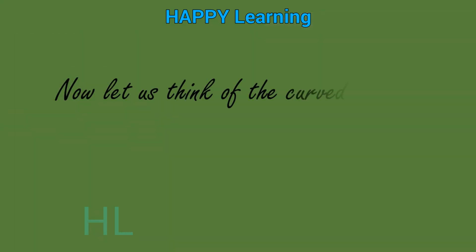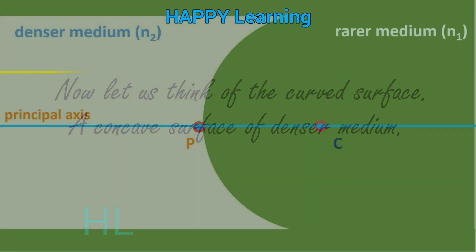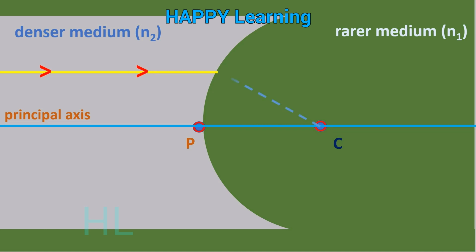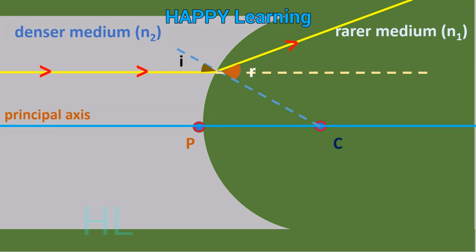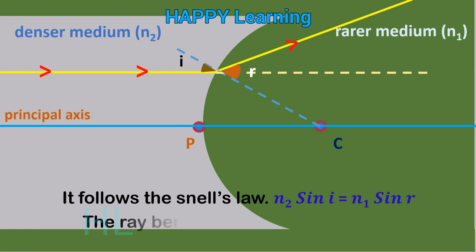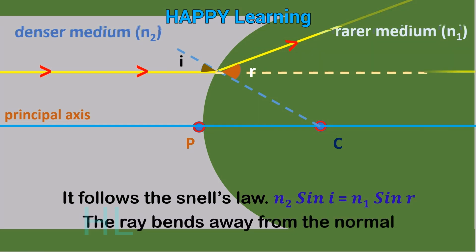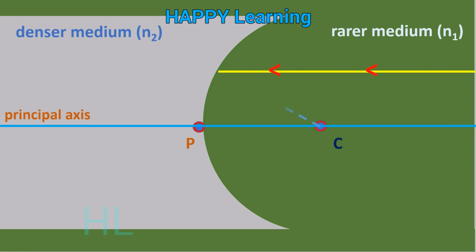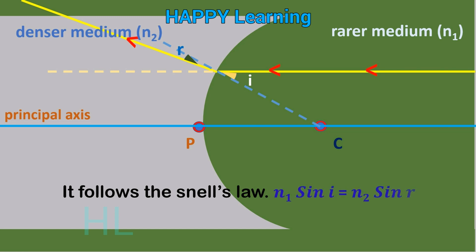Let us think of the curved surface — a concave surface of denser medium. The light ray is passing from denser to rarer at the concave interface. The light ray follows Snell's law: n2 sin i = n1 sin r, and the ray bends away from the normal. Now the ray is falling from rarer to denser. Once again the ray follows Snell's law: n1 sin i = n2 sin r is obeyed, and the ray bends towards the normal.